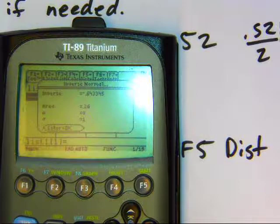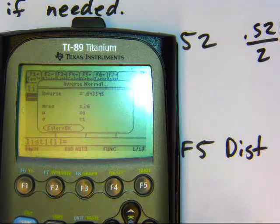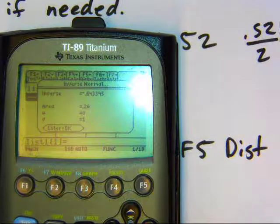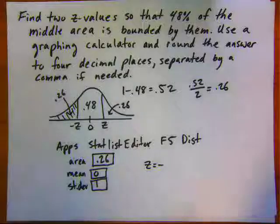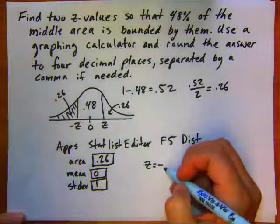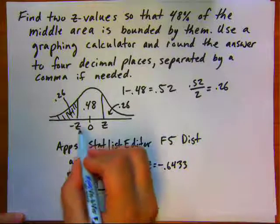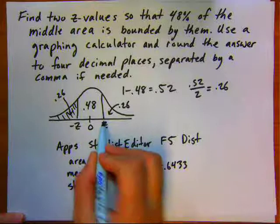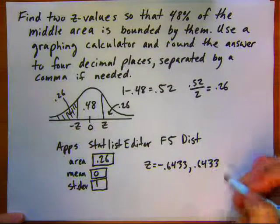So we'd have negative 0.64. Now by symmetry, we know right away that the other Z-score is going to be positive 0.64. And here your Z-score is equal to negative 0.6433. That's this left-hand side. And from the symmetry, we also have positive 0.6433. So there's two answers there.